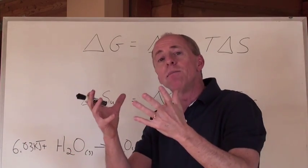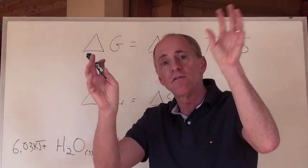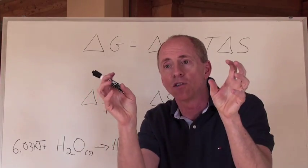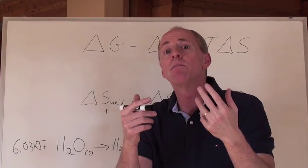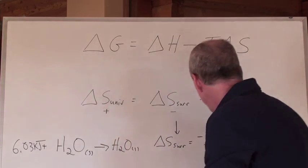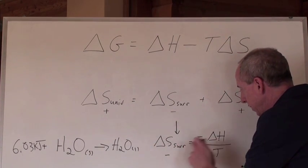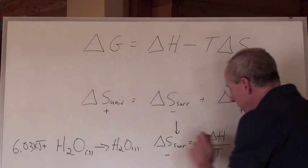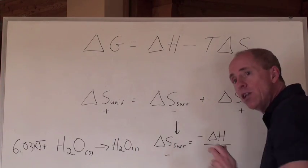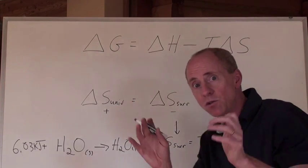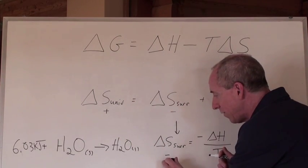If the environment is getting cooler, the molecules in that environment, maybe the gas molecules in the air are slowing down. They're becoming more ordered. That is giving us a negative value here. Because this is a positive value, endothermic, that gives us a negative for the entropy of the surroundings, which means the surroundings are becoming more ordered.